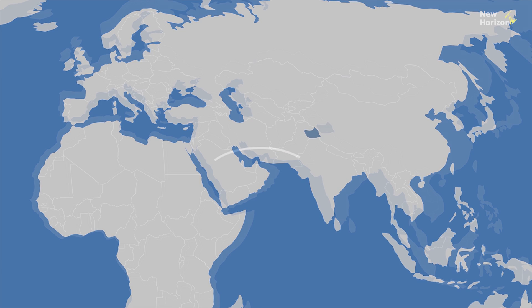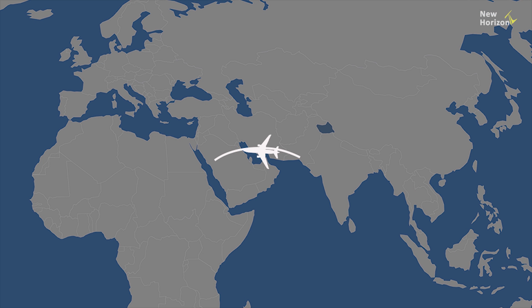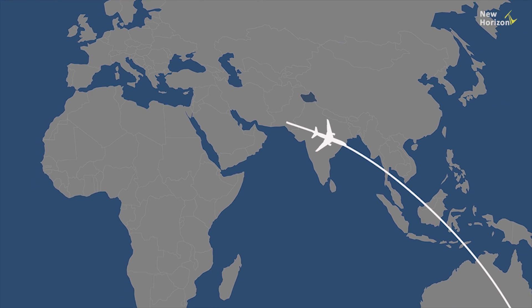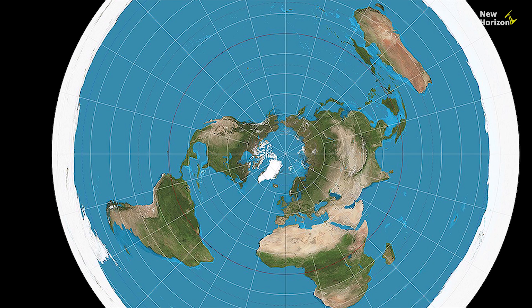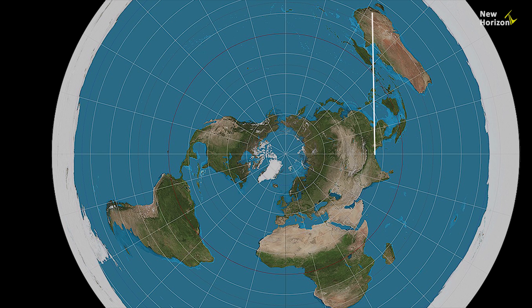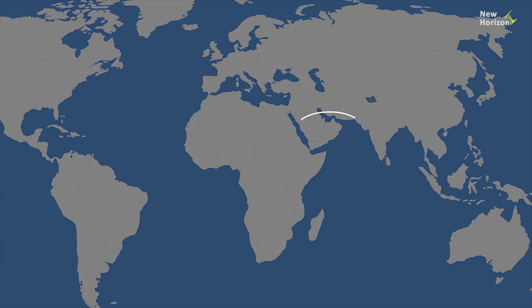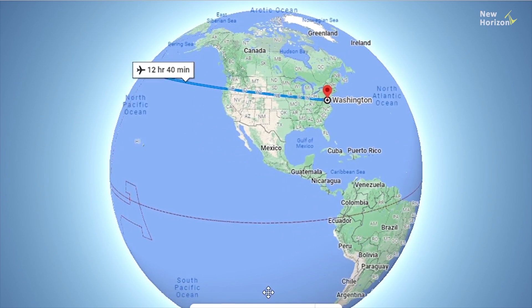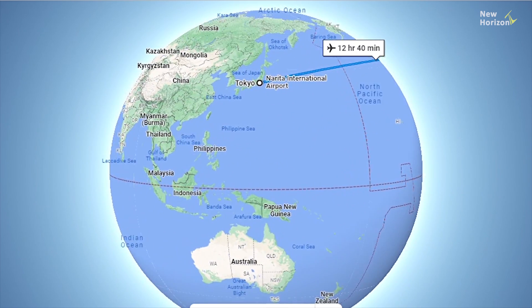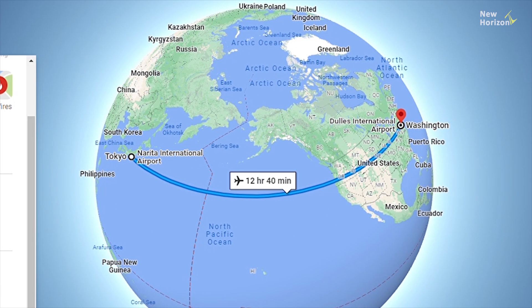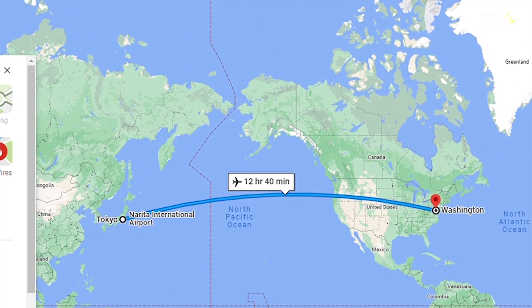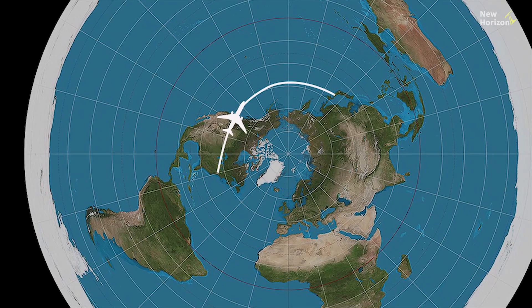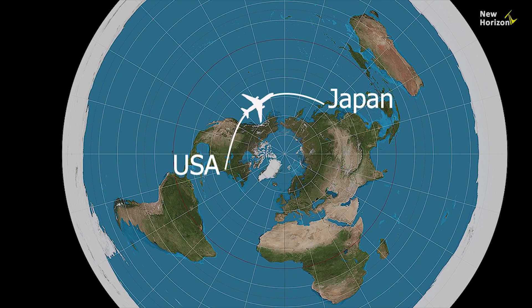If you look at the flight path of any airplane on a flat map, it will be in a curved shape, and the curve increases as the flight distance increases. If the Earth was flat, flight paths would be perfectly straight, because a curve increases the distance. For example, the flight path from Washington D.C. to Tokyo, Japan — about 11,000 km and 12 hours — appears as a curve on the flat map, seeming like an unnecessarily long distance.